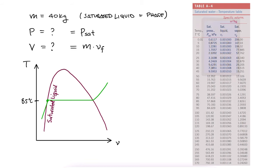We see that for 85 degrees Celsius, the saturation pressure is 57.868 kilopascals.